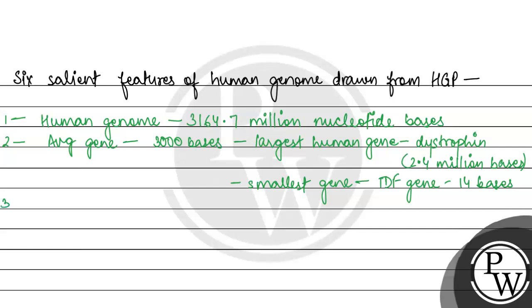The third salient feature is that 99.9% of nucleotide bases are exactly the same in all people.